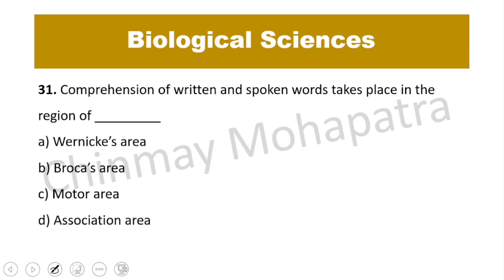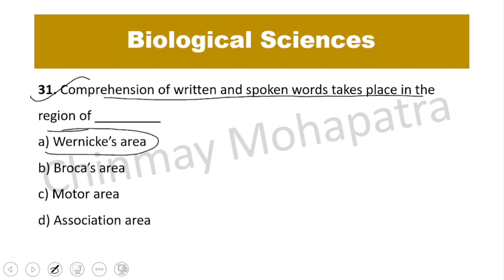Question number 31: Comprehension of written and spoken words takes place in which region? Understanding written and spoken words — the right answer is Wernicke's area, which is located in the temporal lobe on the left side.